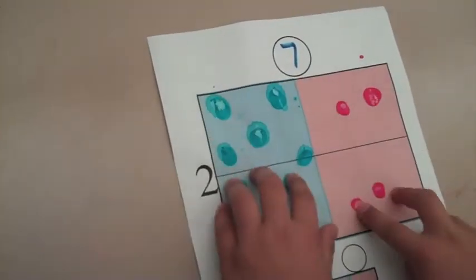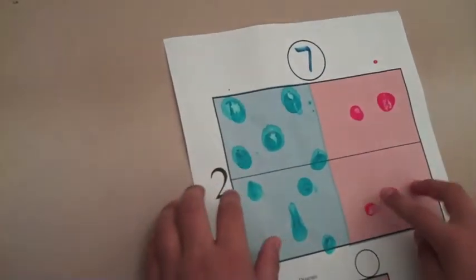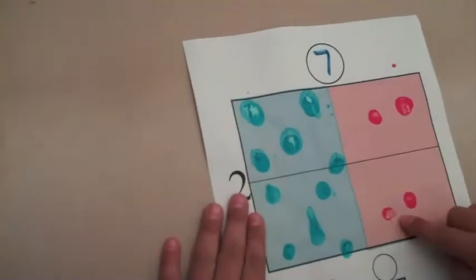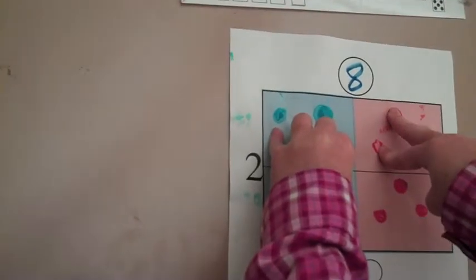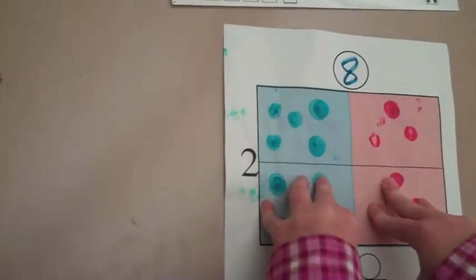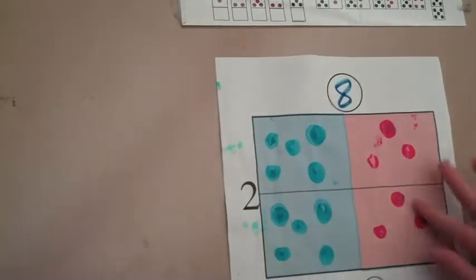Seven times two equals 14. Perfect. Eight times two equals 16. All right.